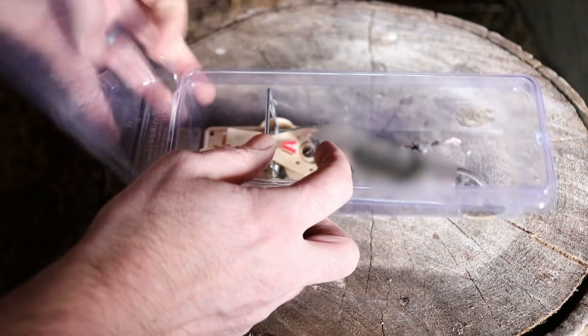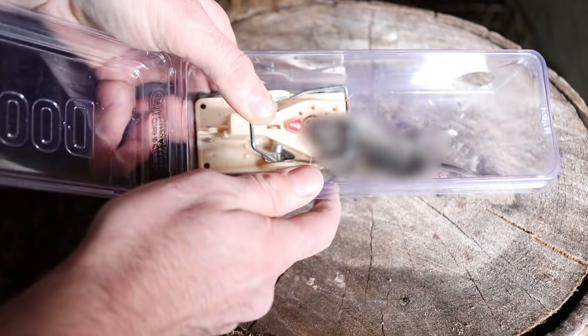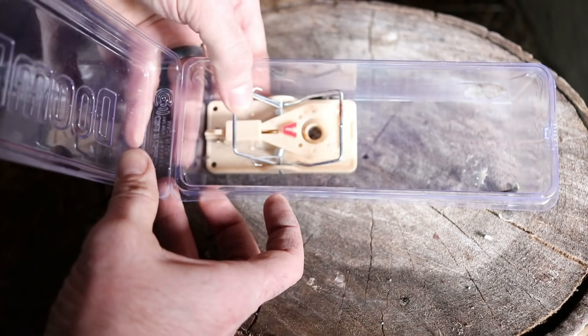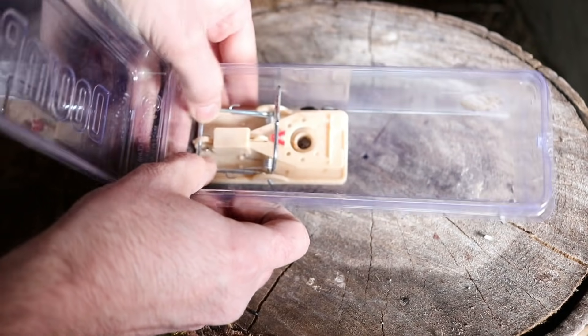To remove it, you lift up the lid, pull back the kill bar and give it a little flip. This trap was very effective. You can reset it and get another mouse.